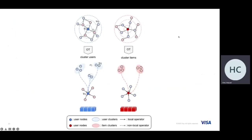This is our entire framework. We have users and items in a local subgraph. We cluster users and items separately, and use mix-up techniques to combine local and non-local representations to get the final representations. As long as we have user and item embeddings, we can use downstream techniques to compute the final score indicating whether a user is interested in an item.